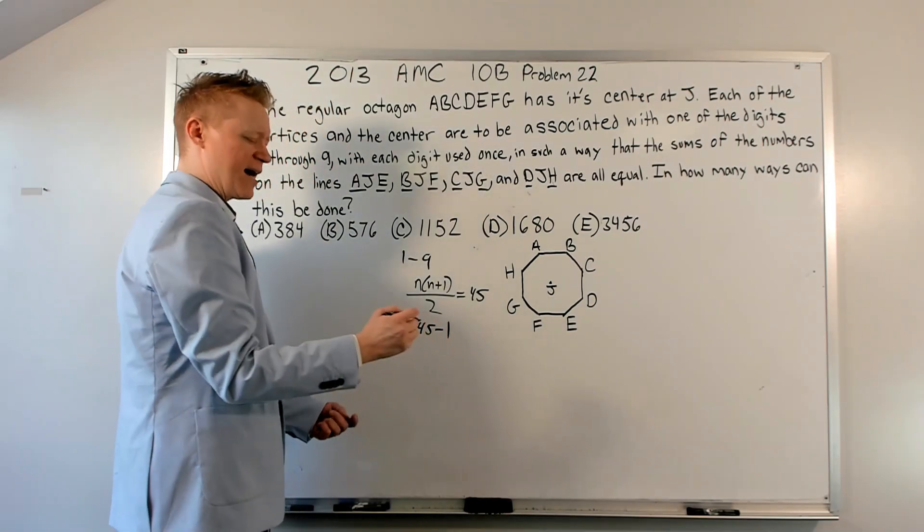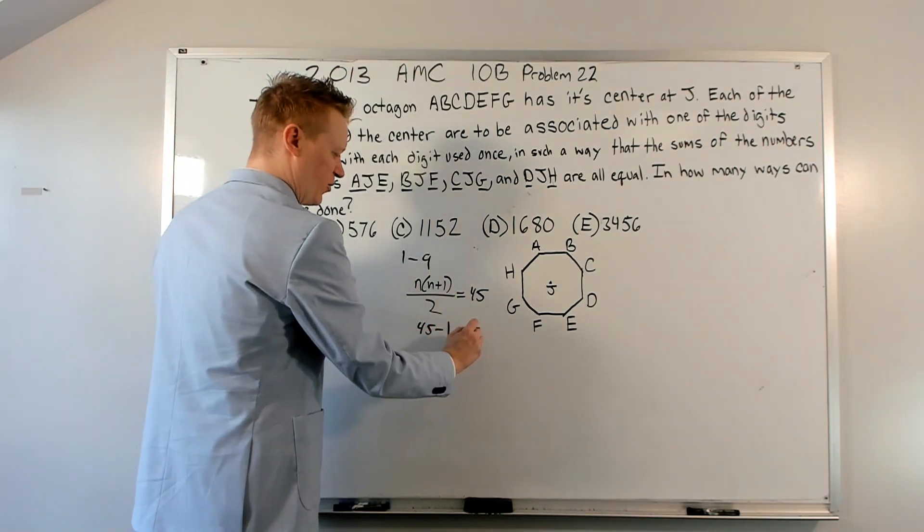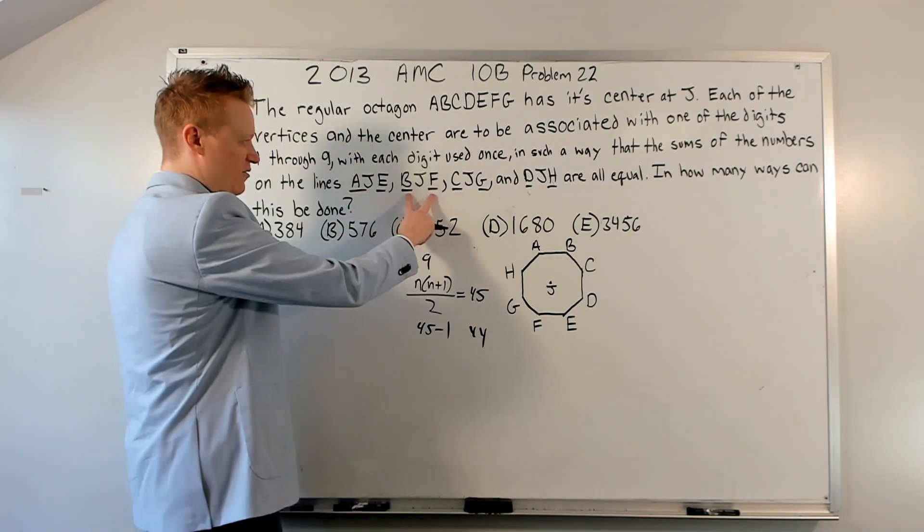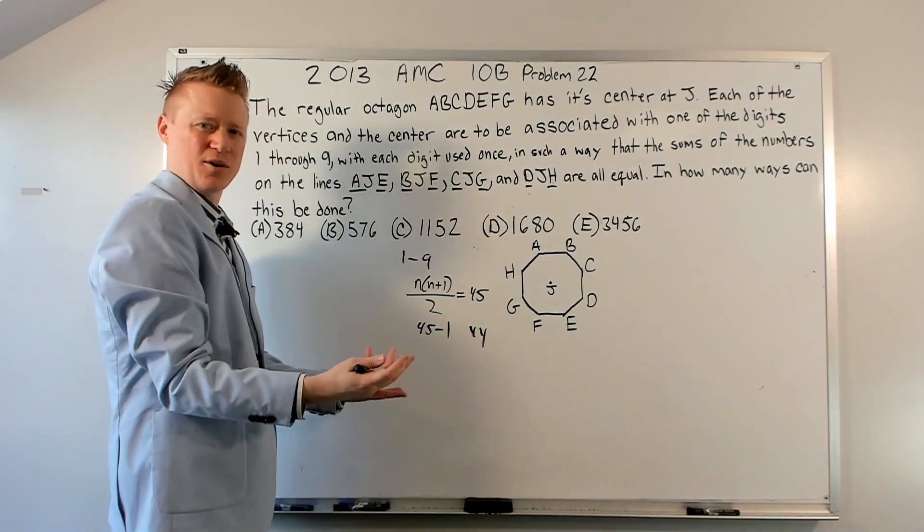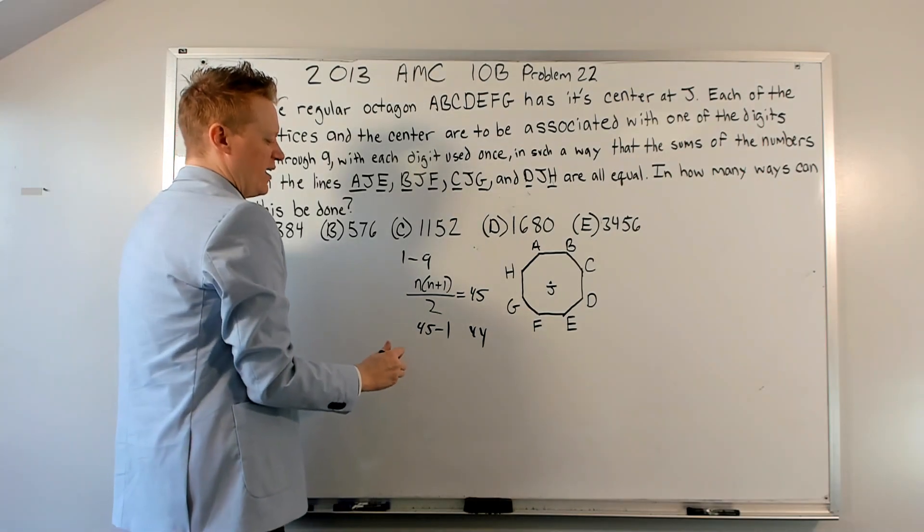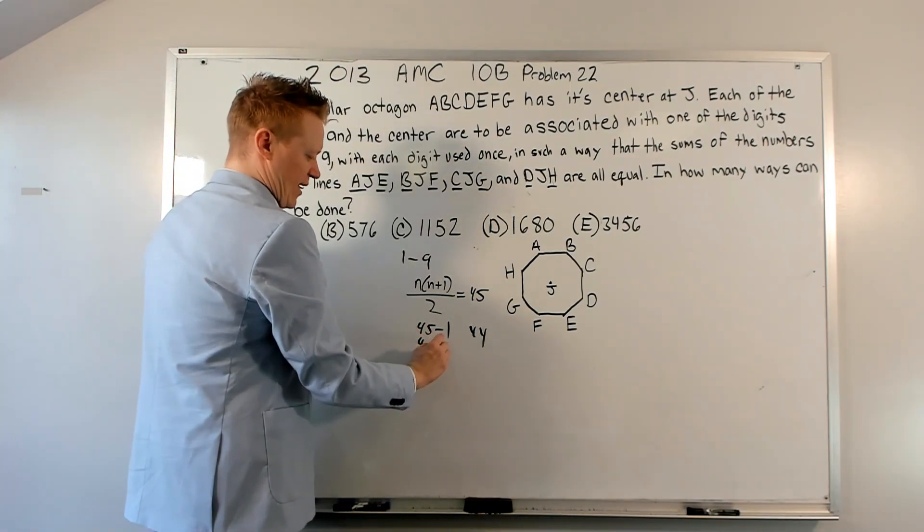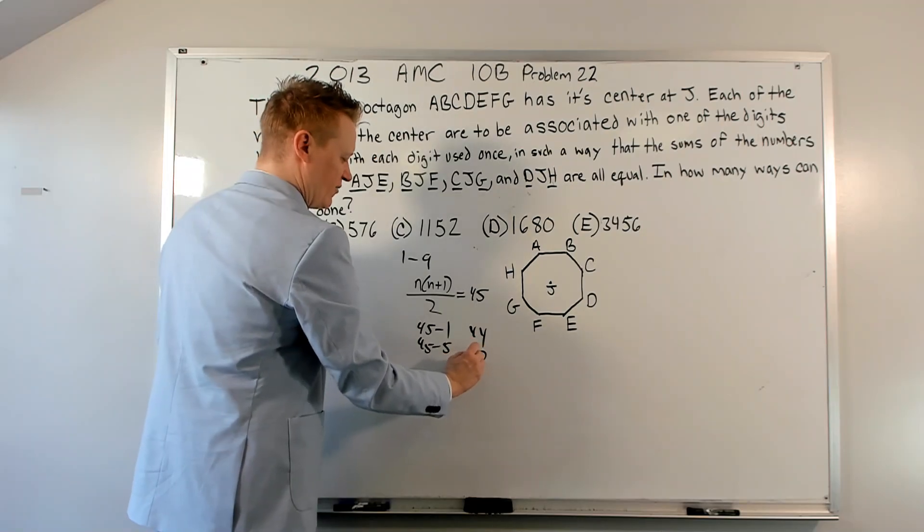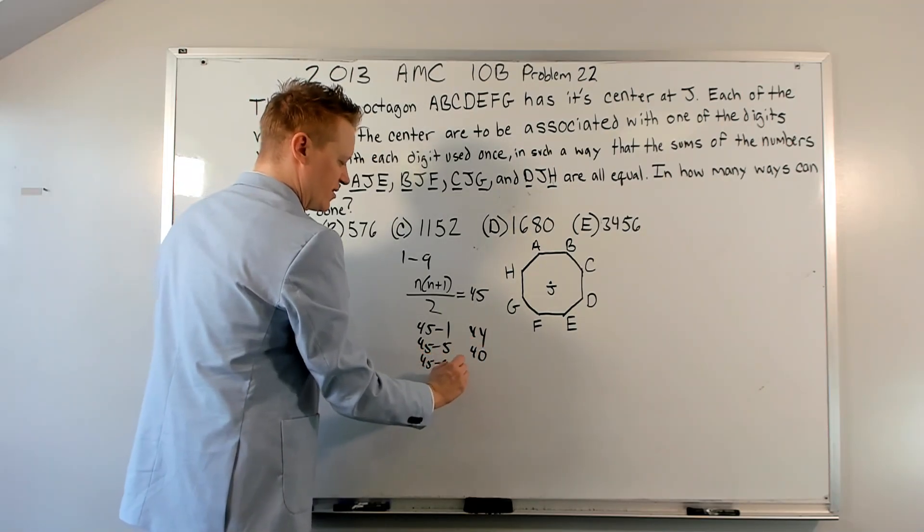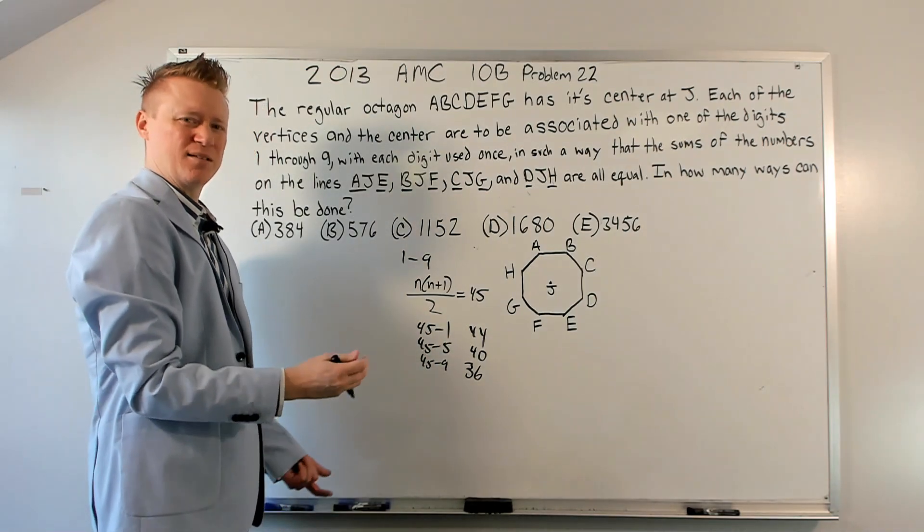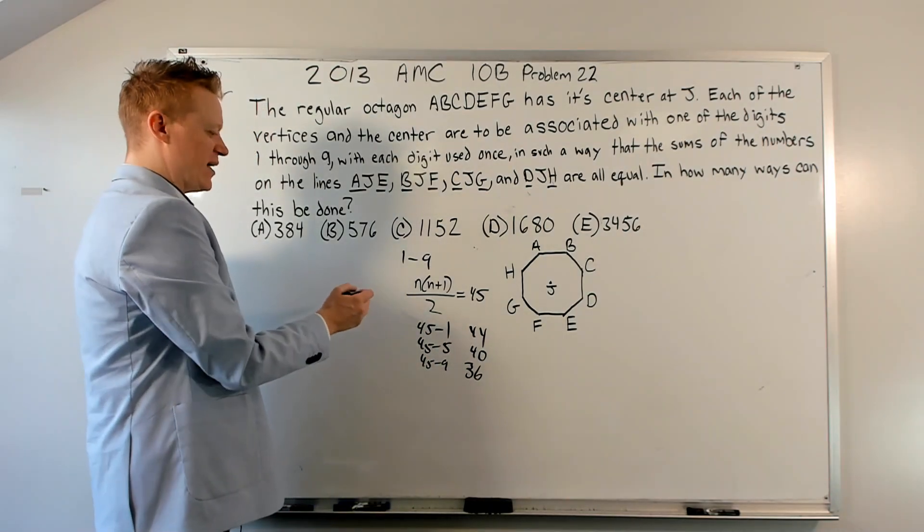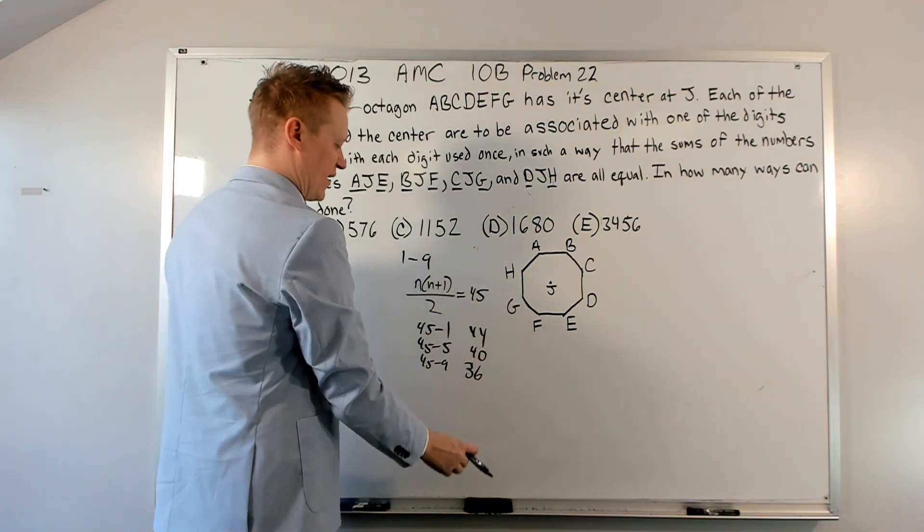The first thing you could subtract is 1 because that gives you 44, and each of the values of these two letters would add up to 11, 44 divided by 4. The next one you can subtract is 5, and that would give you 40. And finally, you could subtract 9 to get 36. These are the only possibilities. So then J can take on the values 1, 5, and 9.